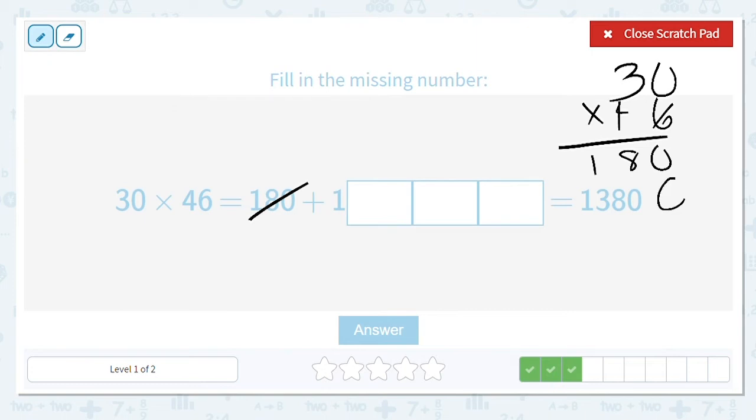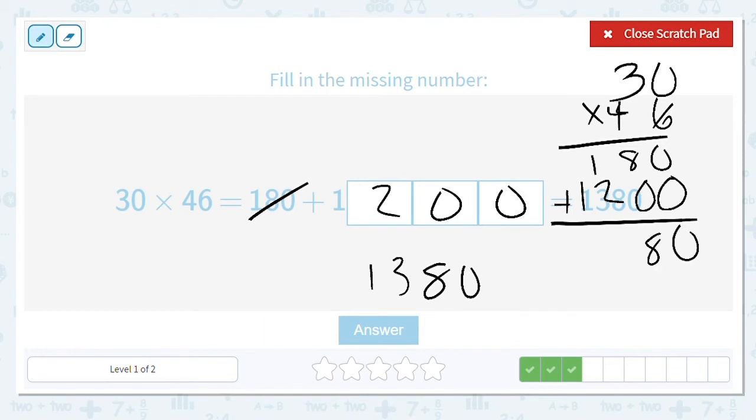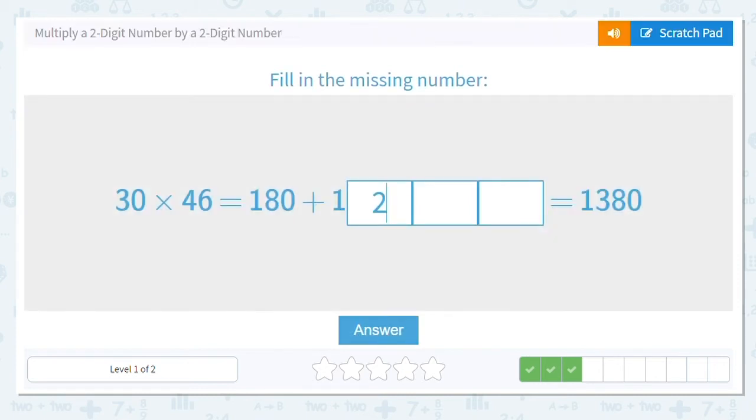Next, since we're done with that ones place, we have to put a 0 here. Now I multiply 4 times 0 is 0, and 4 times 3 is 12, so this should be 1,200. So to check, I'm going to add these two and I should get 1,380. 0, 8, 3, 1. We have a match, so that means 1,200 is correct.